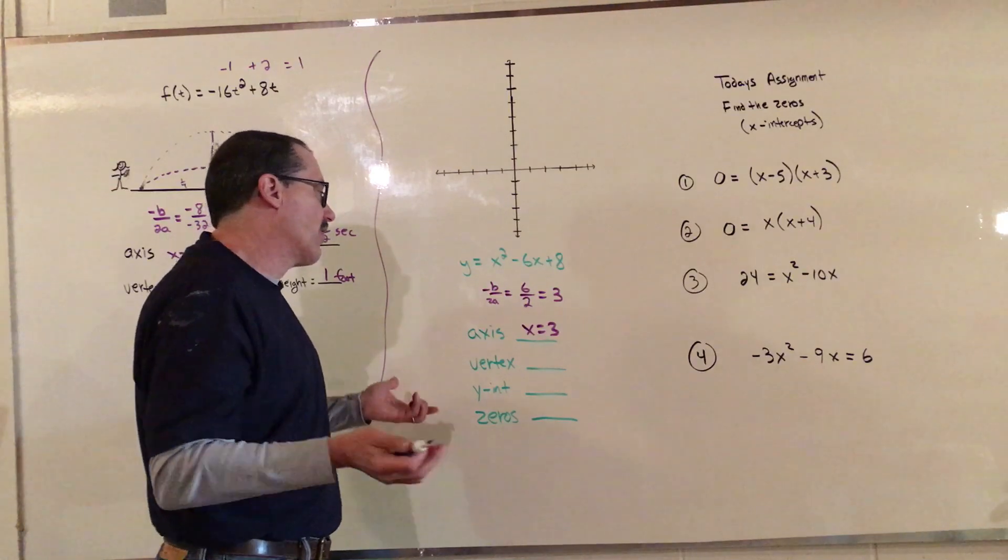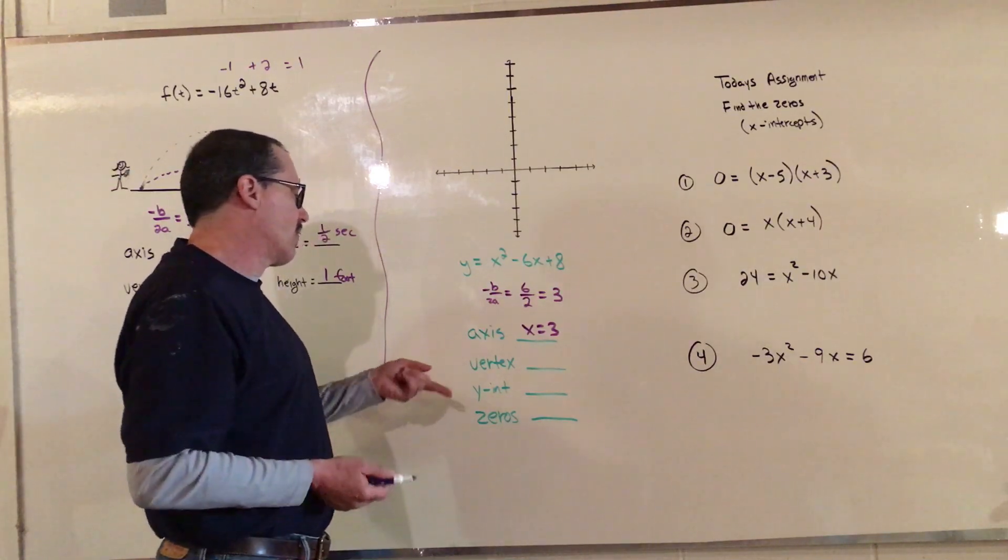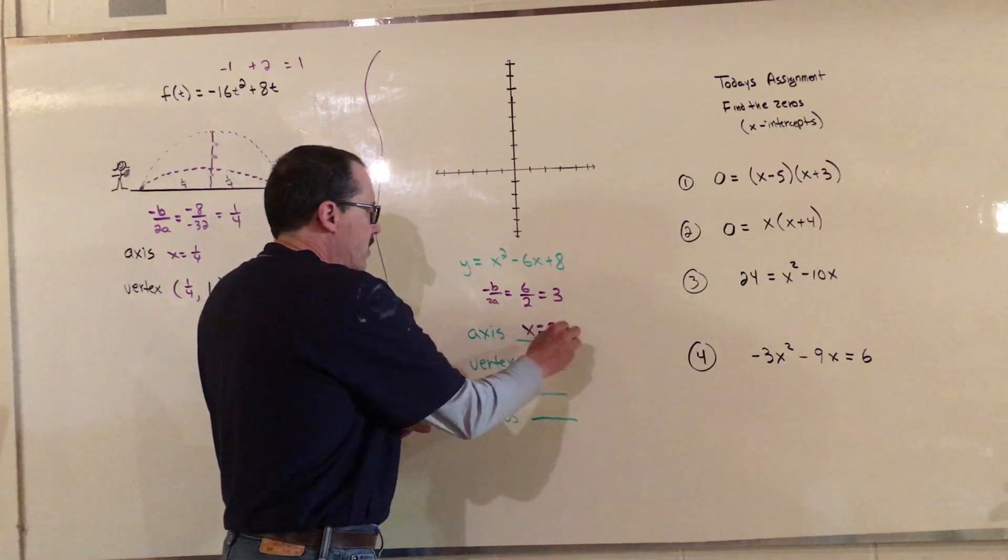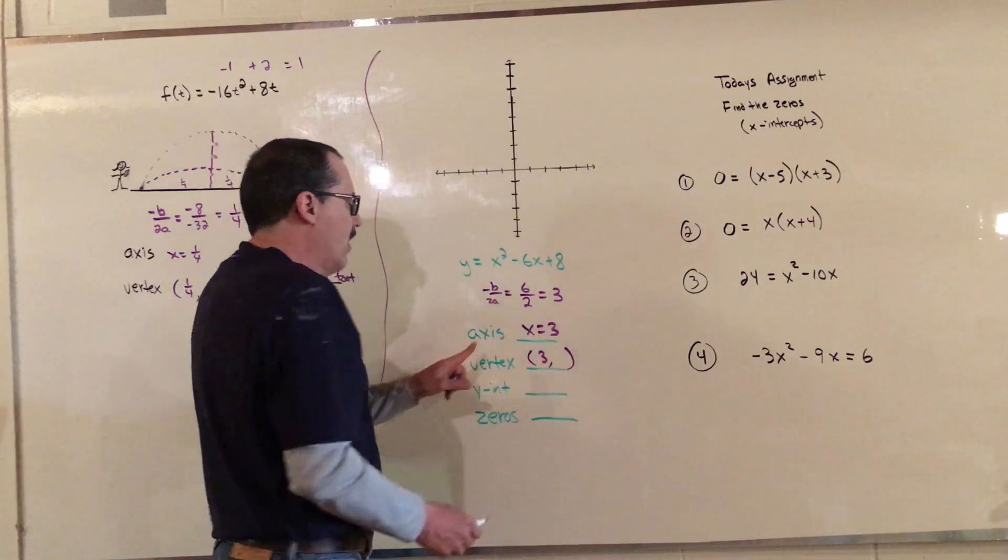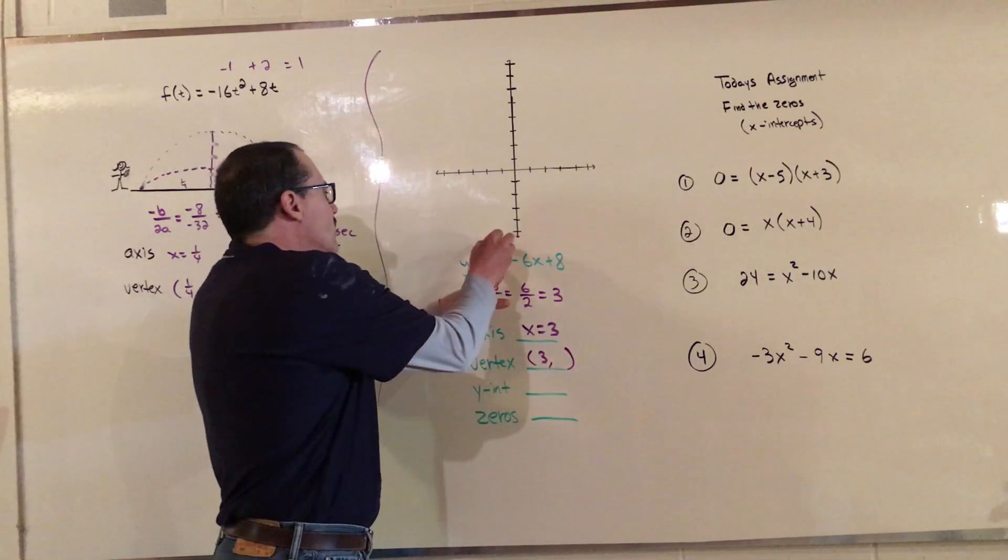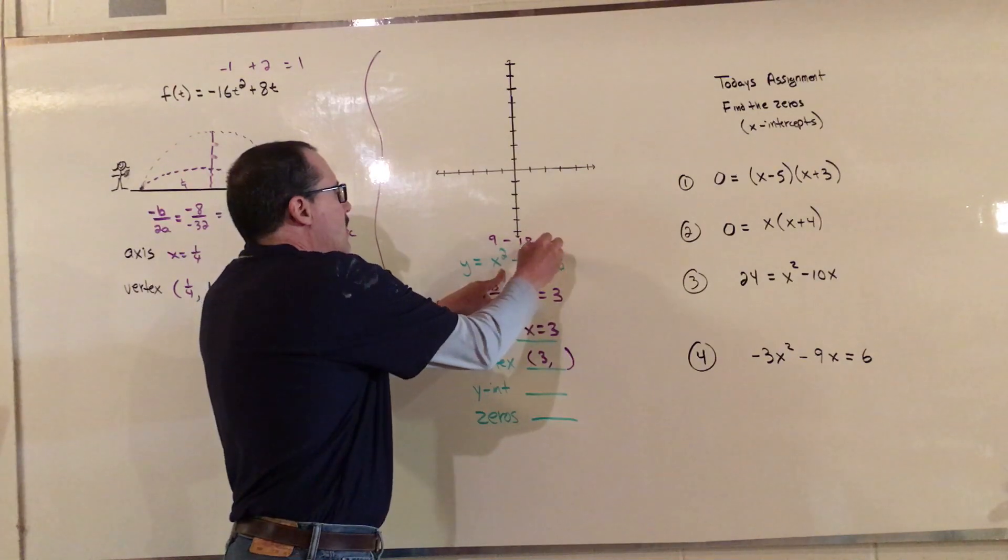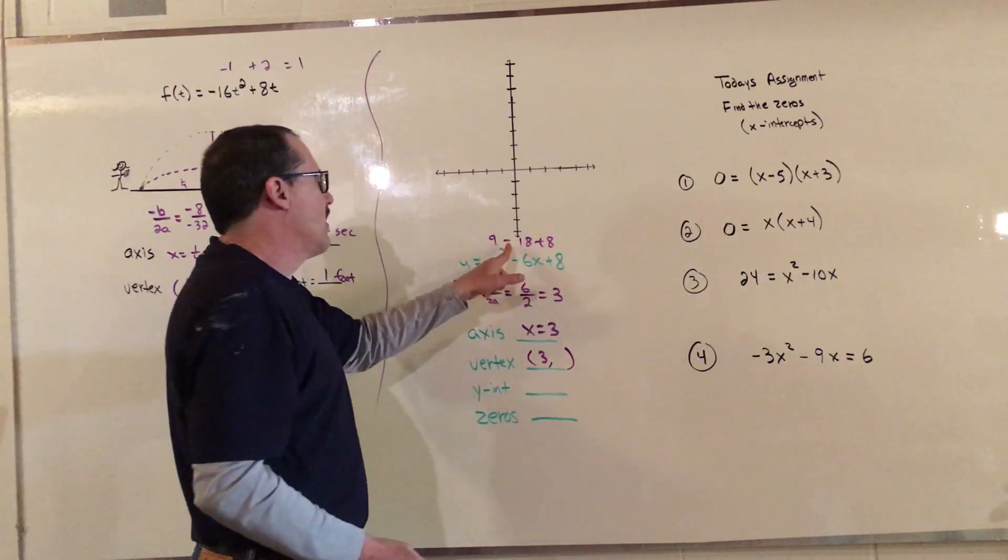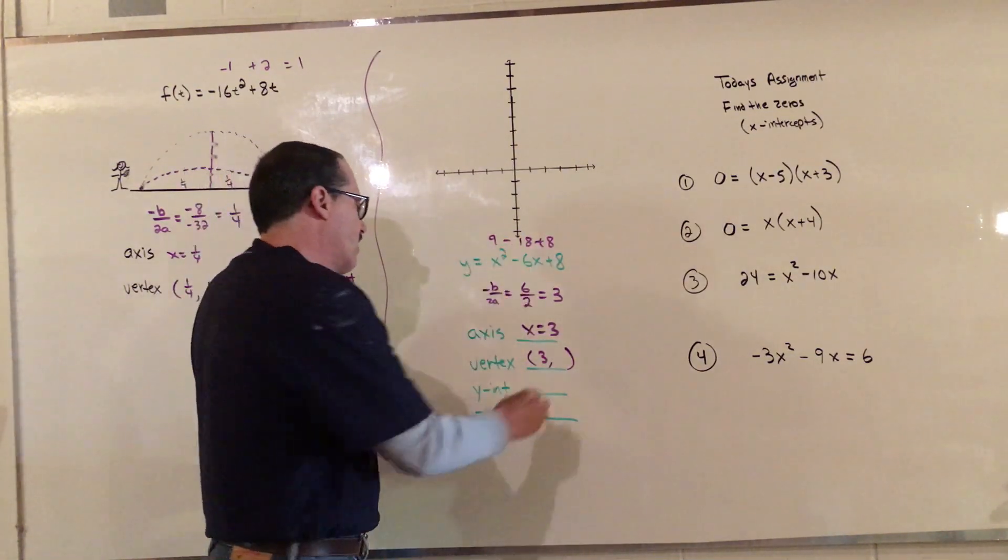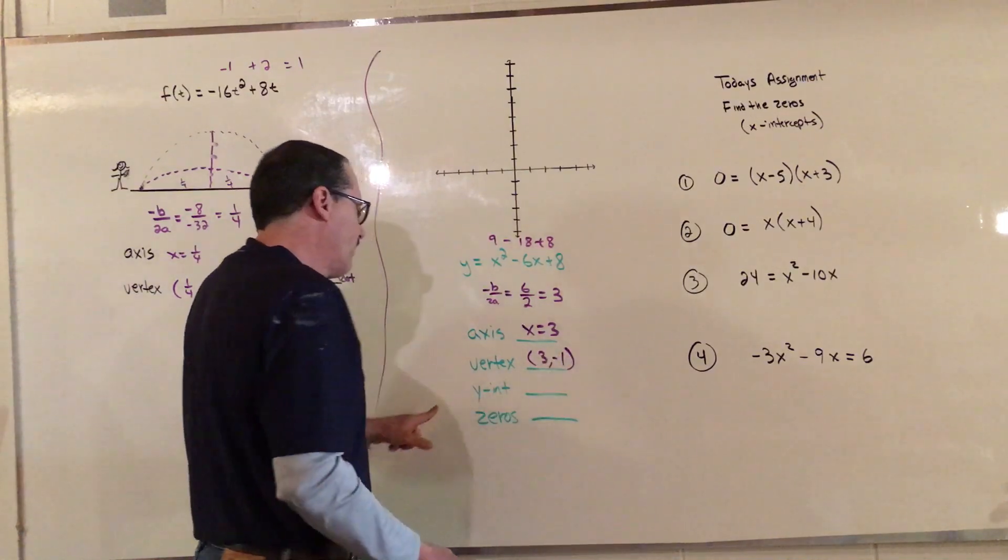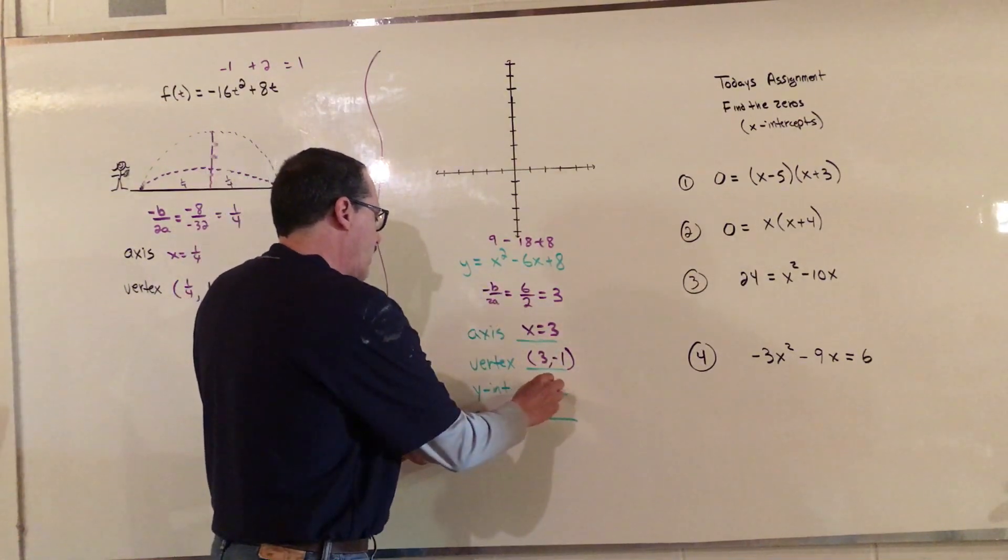It's not that you don't know how to do it, it's just not being careful. The vertex, then x equals 3 is the axis. The vertex is going to be 3. If we plug 3 in here, 3 squared is 9, 9 minus 18 plus 8. That gives me negative 9 plus 8 is negative 1. My y-intercept is this number here, which is 8.